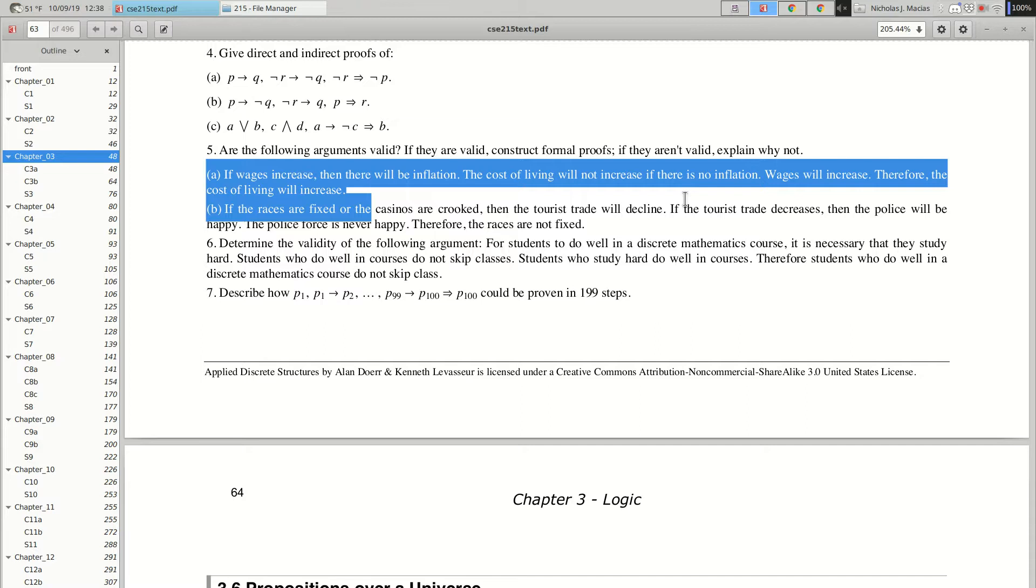So, let's make some propositions. The first sentence is a compound statement, it's an if-then. What are smaller propositions we could write to build up that first if-then statement? W equals wages increase. Okay, let W be the proposition which says wages increase. What's another proposition in there? There will be inflation. Okay, should we call that I? Let I be the proposition. There will be inflation.